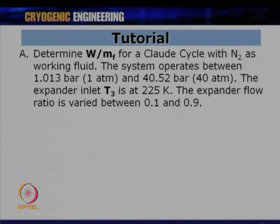Based on what we have learned in the Claude cycle, we now do a parametric study tutorial. Part A determines W / M_f — work of compression per mass of gas liquefied — for a Claude cycle with nitrogen as the working fluid operating between 1 atmosphere (1.013 bar) and 40 atmosphere (40.52 bar), with expander inlet T_3 = 225 K and expander flow ratio X varied from 0.1 to 0.9.